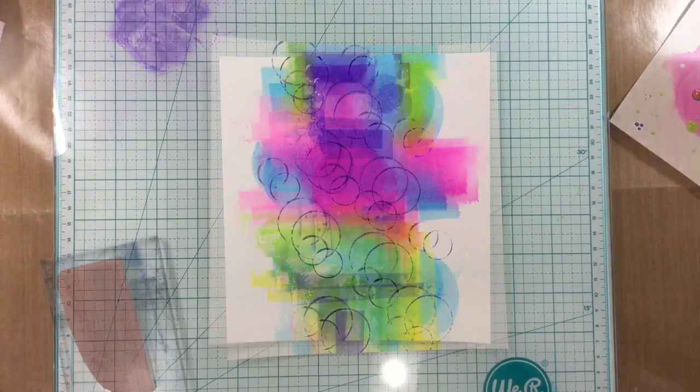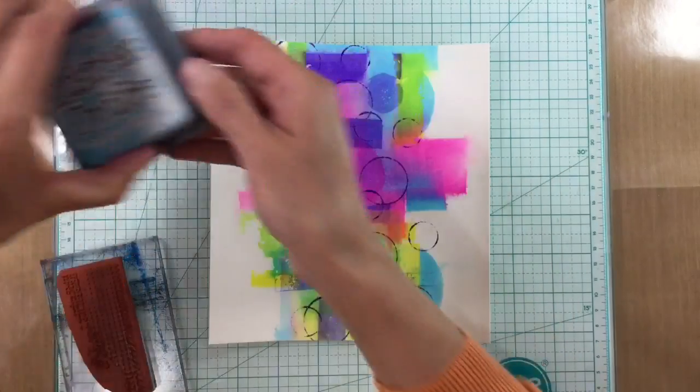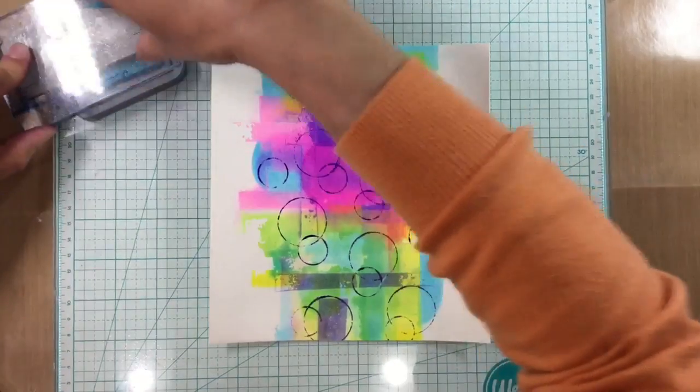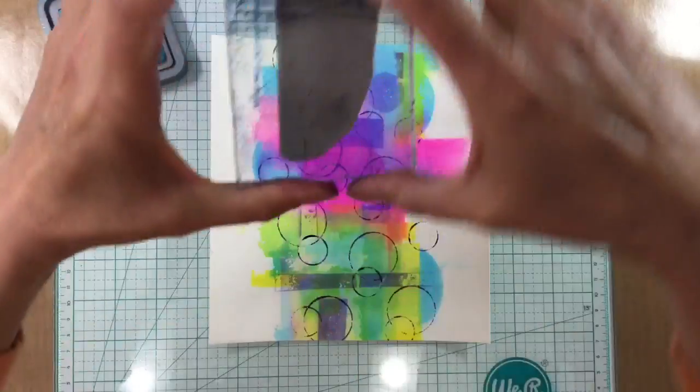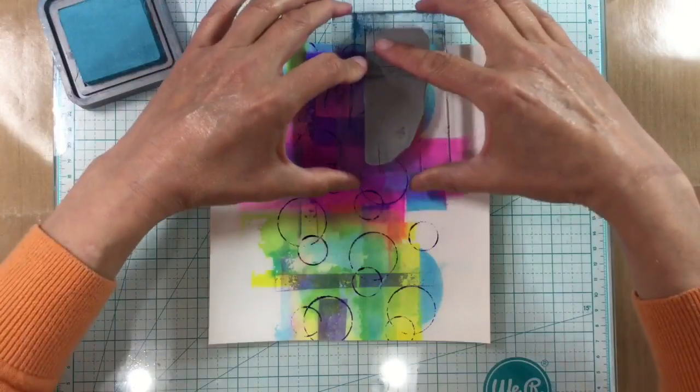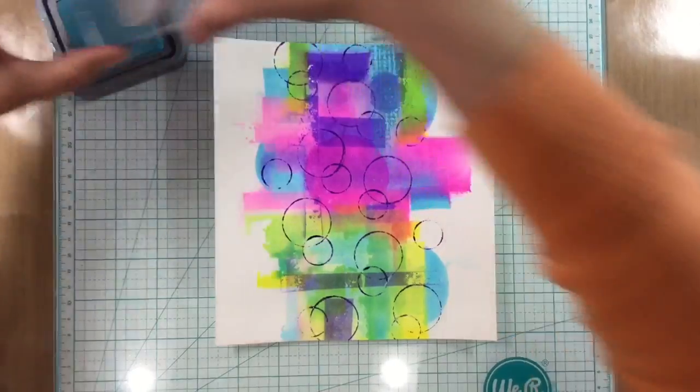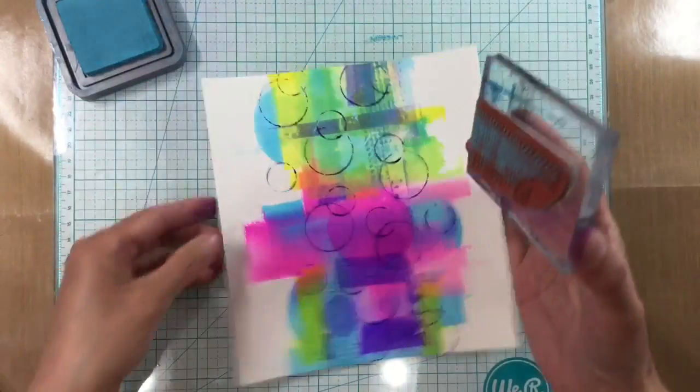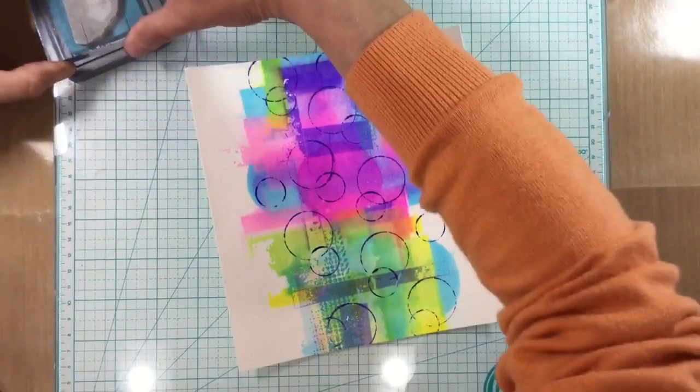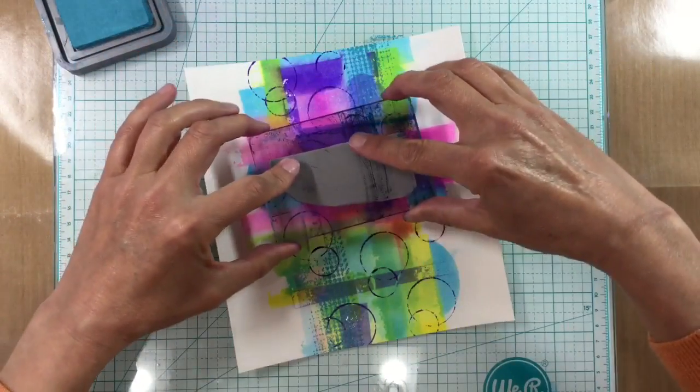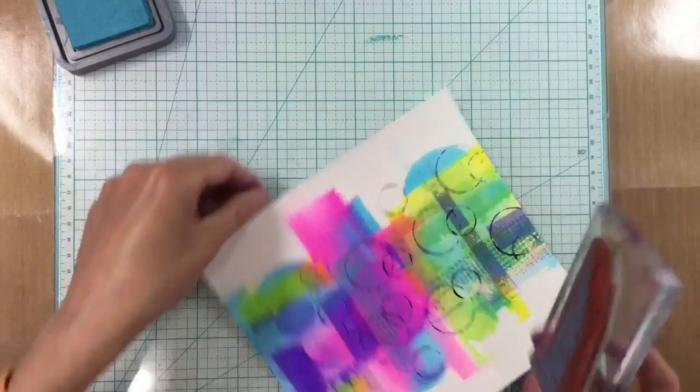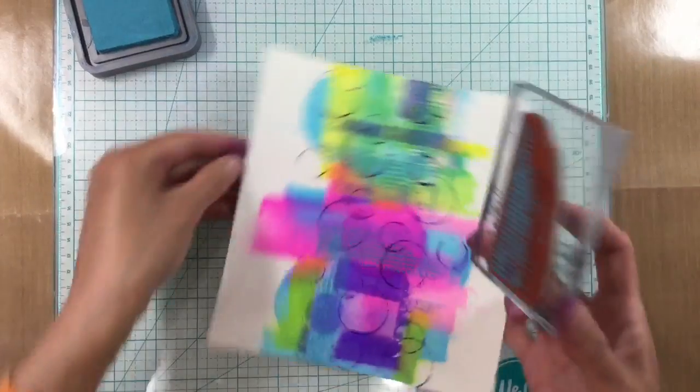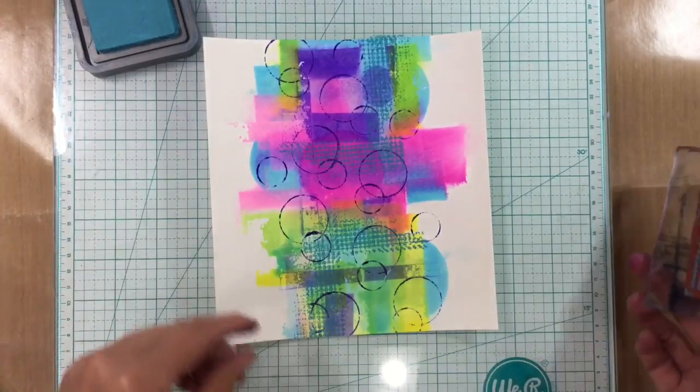yeah I'm happy with that now I just want to add a bit of stamping. I'm going to use my distress oxides in broken china and I've got an indigo blue background stamp so I'm just going to ink this up and just add some detail. Where do I want it to go? Let's have one up here like this, turn it around the other way actually and do one at the other end there we are, and then I can have one maybe here and we'll do the same the other side